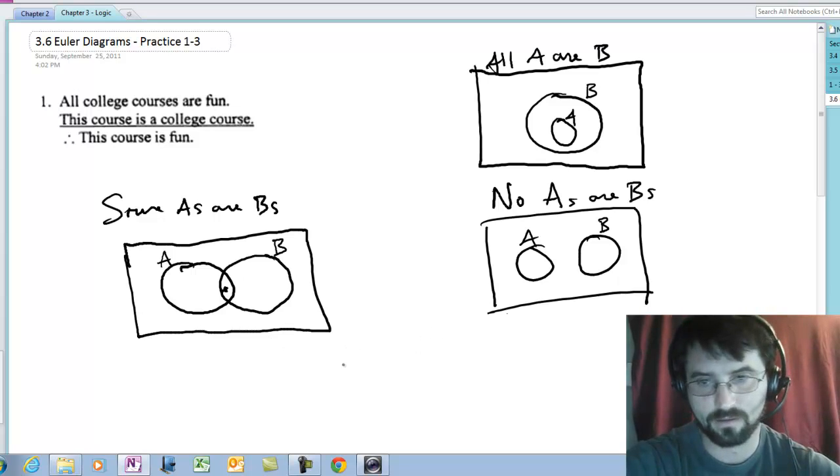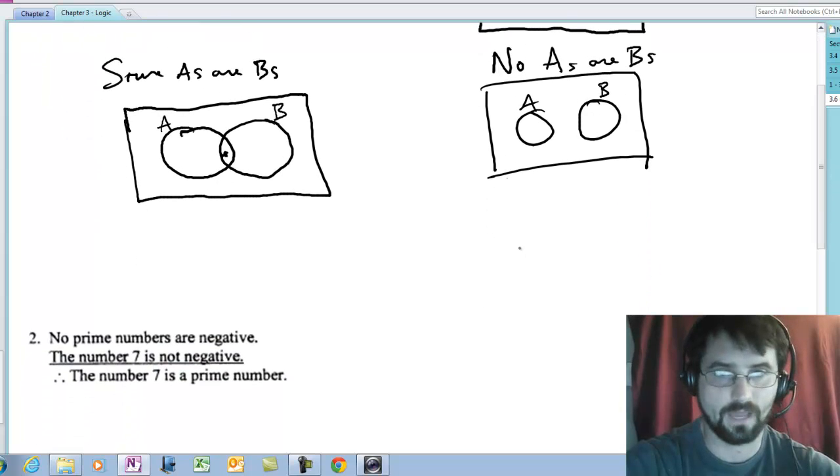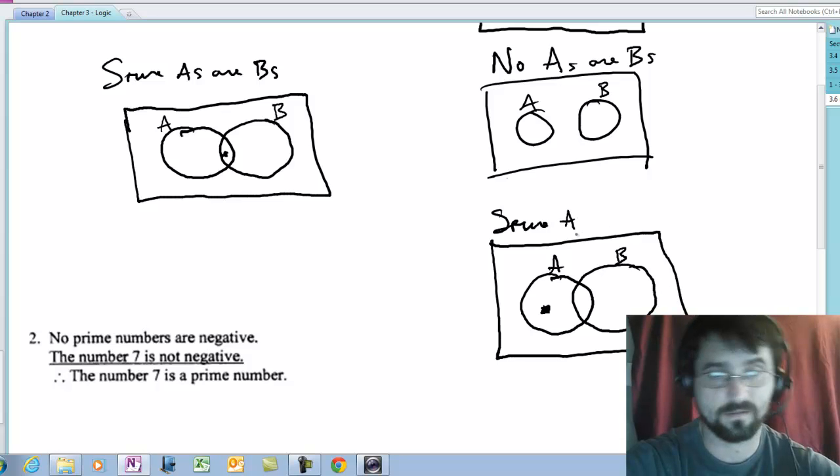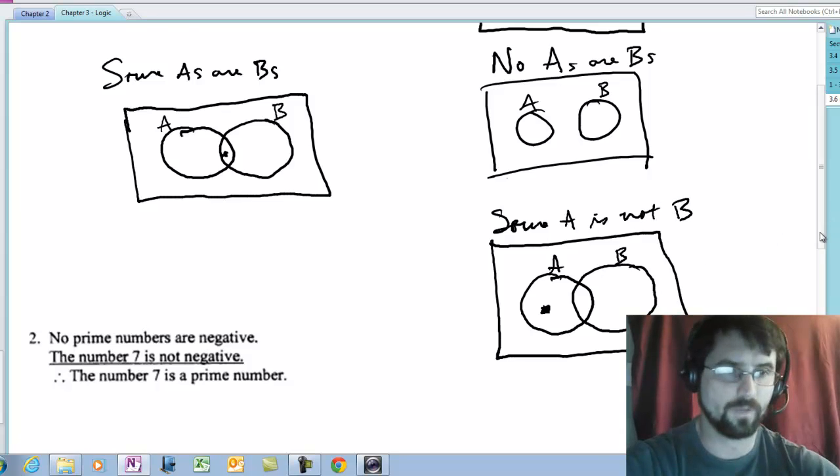If I wanted to say that some A's are not B's, then my picture for that would look like some A. There's an A that is not a B. So that would be some A is not B. Those are our four basic pictures.